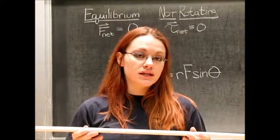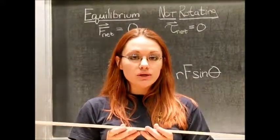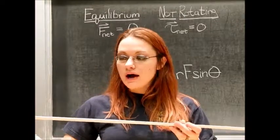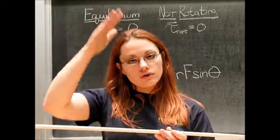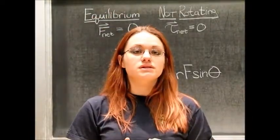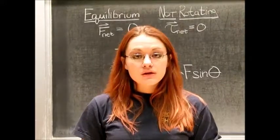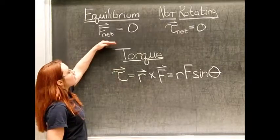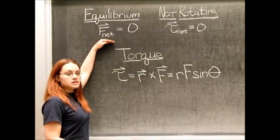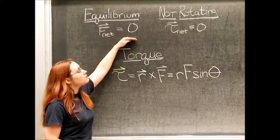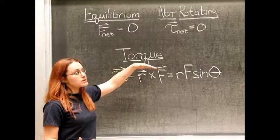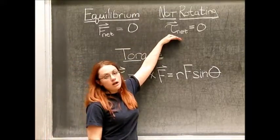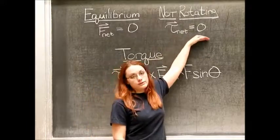This demonstration is used to illustrate torques, equilibrium, and how horizontal and vertical components of force interact with each other. So to begin with, we know by definition of equilibrium that all of the forces present in our system must add up to zero, and if the object is also not rotating, we know that all of the torques in our system must also equal zero.